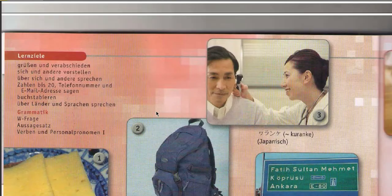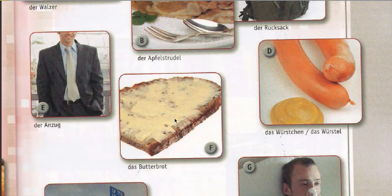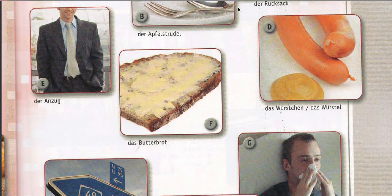Number one is 'Das Butterbrot' — it's a sandwich. 'Das' is representing the neutral gender. You are going to fix it with the green fire. If you are eating a sandwich which is burning on fire and it is written over there with green color — 'Das Butterbrot' — just make the picture ridiculous. You will never forget. For number two, 'Der Rucksack' means backpack, which is representing the masculine gender.